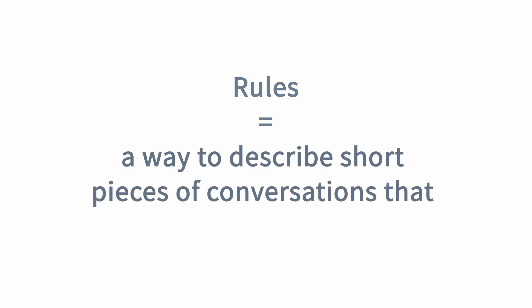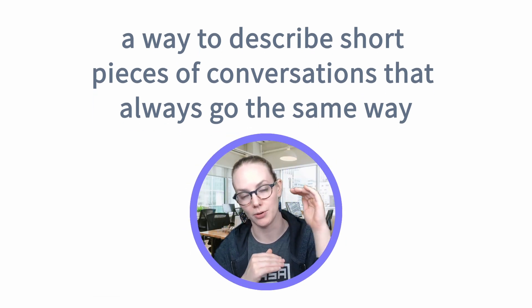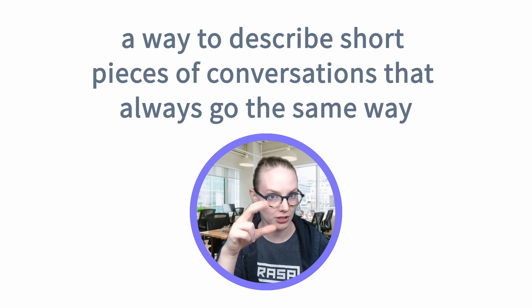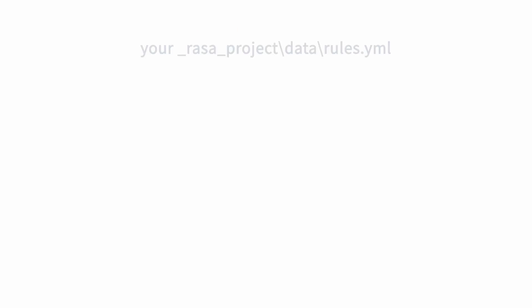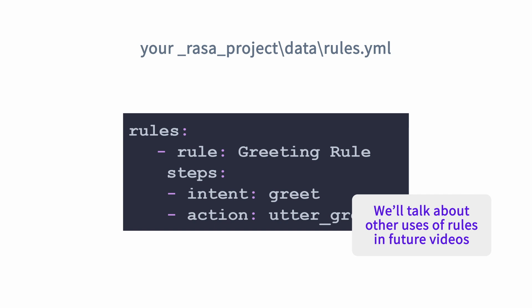Rules are a way to describe short pieces of conversation that always go the same way. Stories are for longer chunks of conversation and for your machine learning to learn from. Rules handle small chunks where you don't need machine learning — you know what should happen and it's always going to happen the same way. For example, if the user says something identified as a greeting, the assistant always greets back. Your rules go in the same data folder as your stories in a file called rules.yaml.